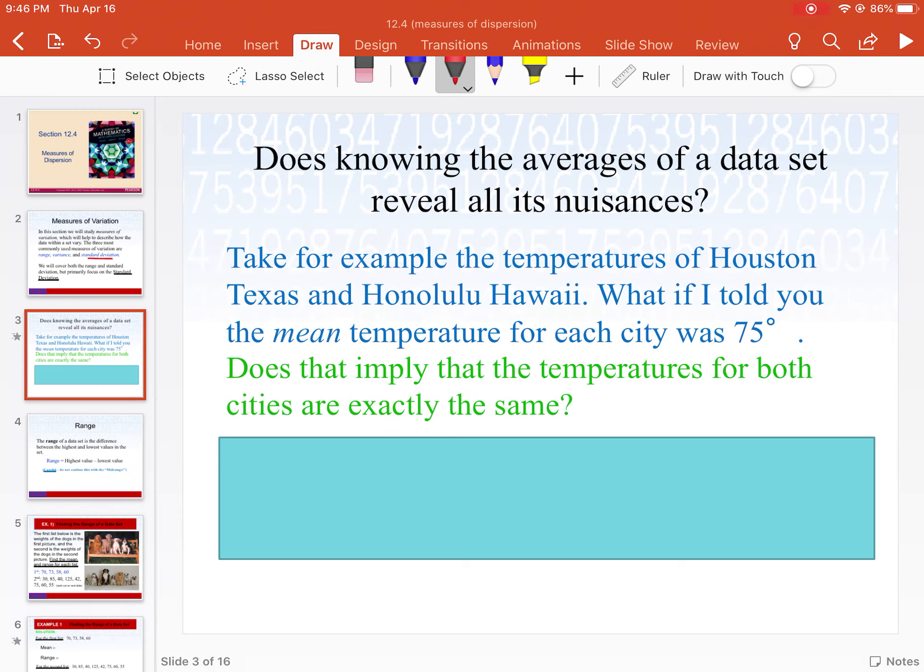Do you think knowing the averages of a data set reveal all of its nuances? If I just simply told you we took a test and the class average was a 75, does that tell you all you need to know? Does that mean that everybody in the class got a 75? Well it could mean that, it could also mean that half the class got a hundred and half the class got a 50, which would average out to 75.